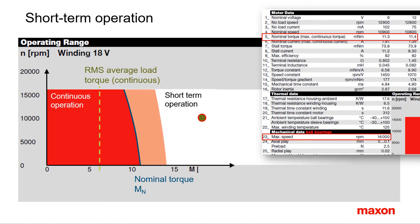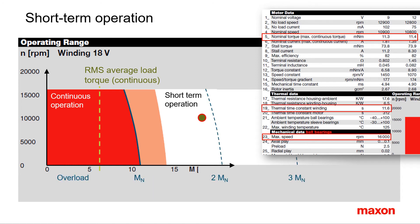Higher torques than nominal are possible, but only for a limited amount of time. How long an overload situation may last depends on the amount of overload torque and the motor type. As a rule, the larger the motor, the longer the overload can be. Typically, overload can last several seconds, as indicated by the thermal time constant of the winding. Roughly speaking, a motor can support two to three times the nominal torque for periods up to this thermal time constant.